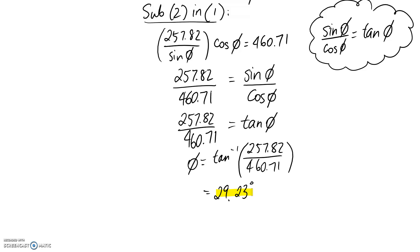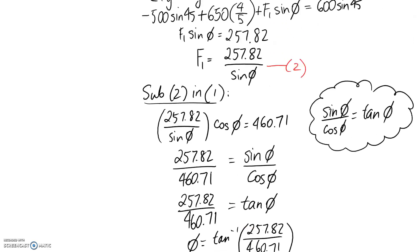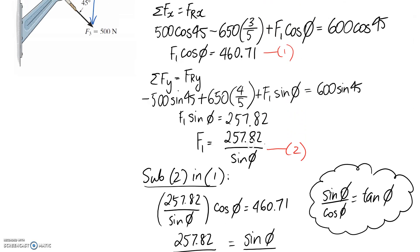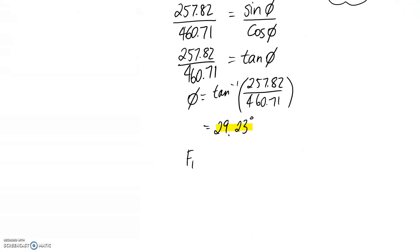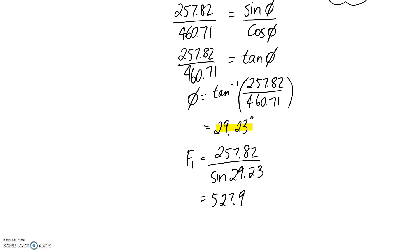So phi = 29.23 degrees is the angle at which F1 acts. The only remaining piece is the magnitude F1 itself. Substituting phi back into the rearranged equation 2: F1 = 257.82 divided by sin(29.23°), and the answer comes out to approximately 527.9 newtons. That's both answers for the question.